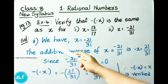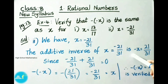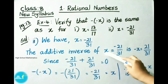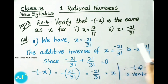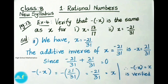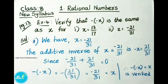See now, second one. We have x equal to minus 21 by 31. The additive inverse of x, that is minus 21 by 31, is minus x equal to 21 by 31. Additive inverse of minus 21 by 31 is 21 by 31. Since minus 21 by 31 plus 21 by 31 is equal to 0. They ask us to verify minus of minus x is equal to x. So minus of minus x equals to minus of 21 by 31, which is minus 21 by 31, which is equal to x value. Therefore, minus of minus x is equal to x. It is verified.